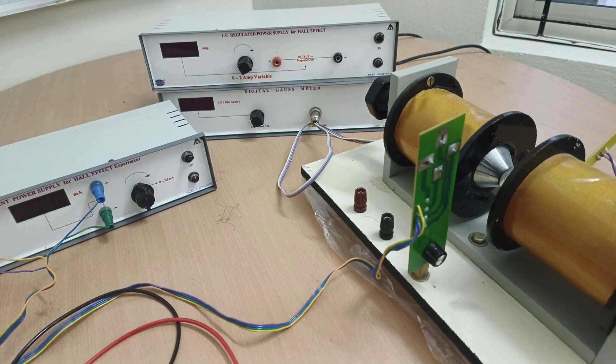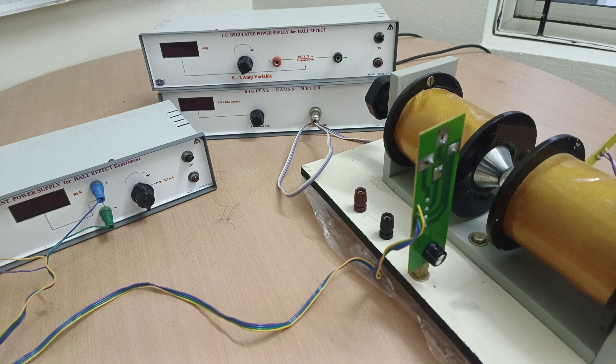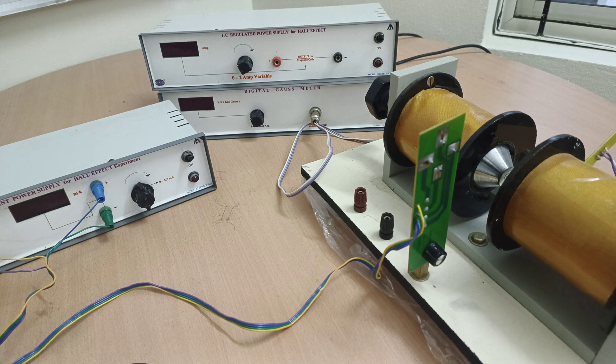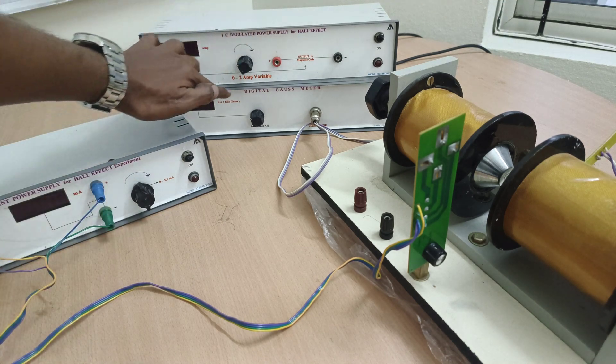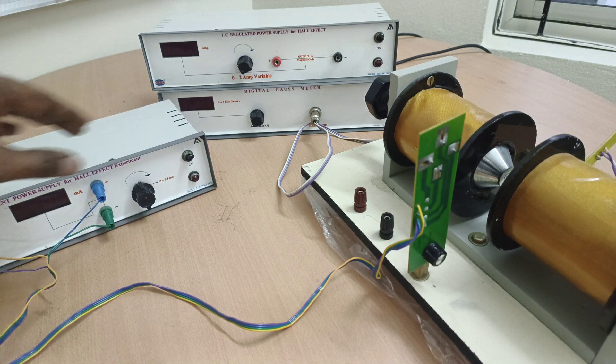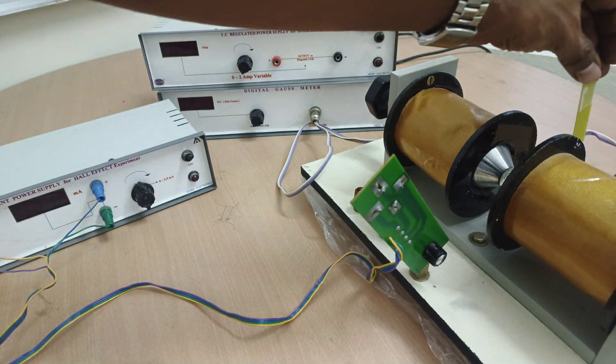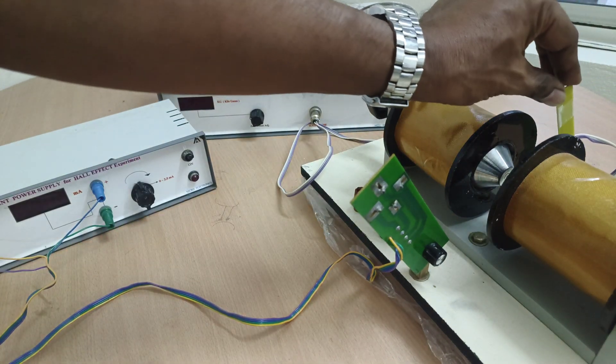To perform these experiments we need some apparatus: IC regulated power supply, digital gauss meter, constant current power supply, electromagnets, Hall probe, and gauss probe.